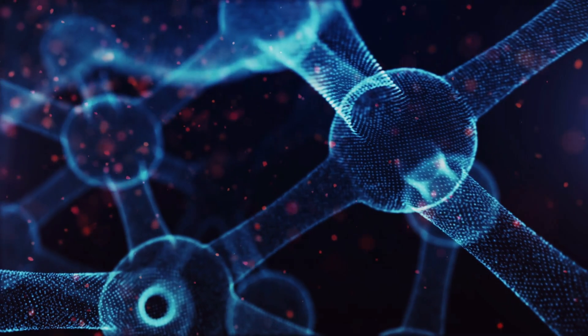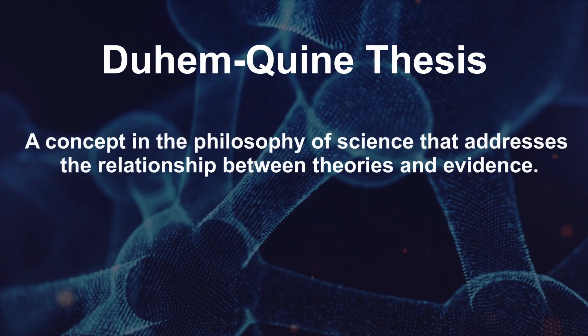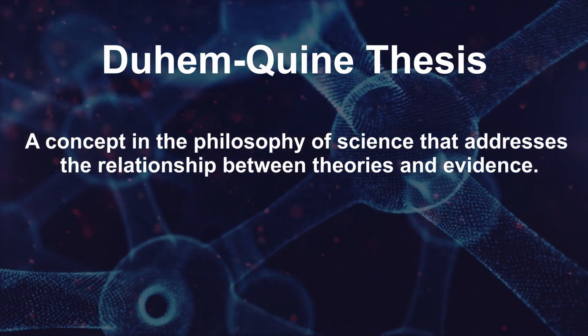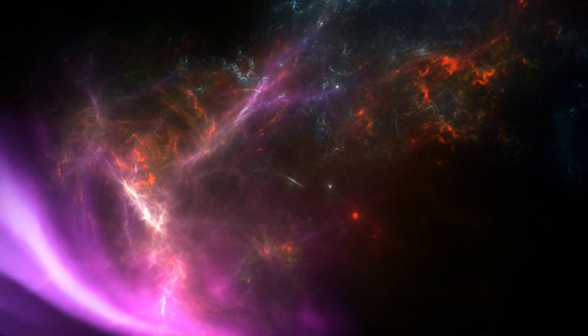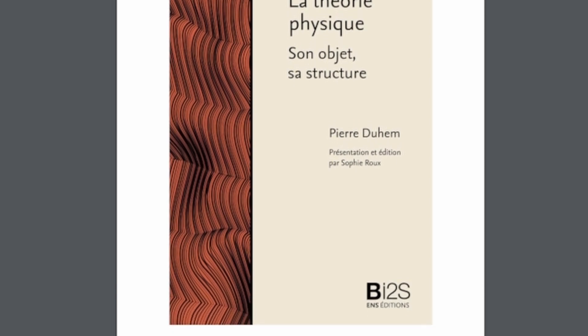The Duhem-Quine thesis, also known as the Duhem-Quine problem or the underdetermination of theory by evidence, is a concept in the philosophy of science that addresses the relationship between theories and evidence. It is named after the French physicist Pierre Duhem and the American philosopher Willard van Orman Quine, who made significant contributions to our understanding of the complex nature of scientific theories and the challenges involved in testing them. One of Duhem's most influential works, La Théorie Physique Son Objet et Sa Structure — in other words, The Aim and Structure of Physical Theory — published in 1906, laid the foundation for what would later become known as the Duhem-Quine thesis.